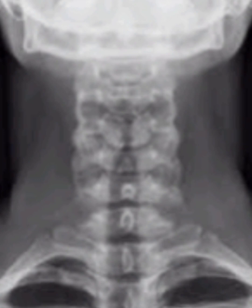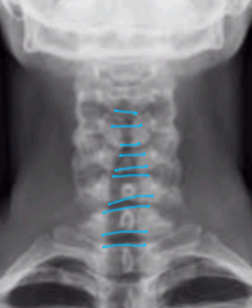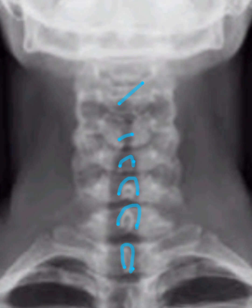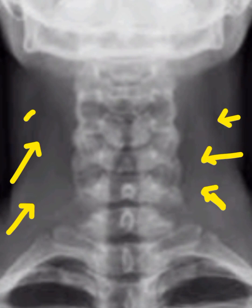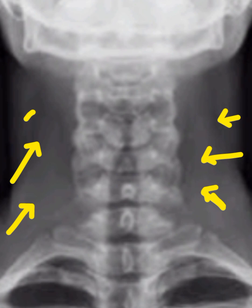C2 and C1 are better seen on the odontoid view or open mouth view. Again see the alignment of the vertebral bodies and transverse processes. Don't forget to look for the intervertebral disc spaces, and in the center this black lucency indicates the trachea. There are also some bony markings on the vertebral body, showing the spinous processes of the vertebral bodies, and lastly have a look at the soft tissues of the neck.